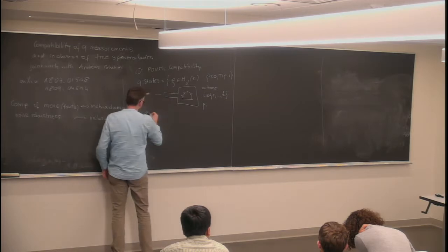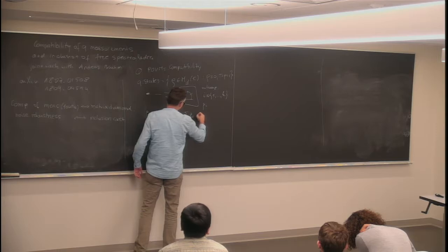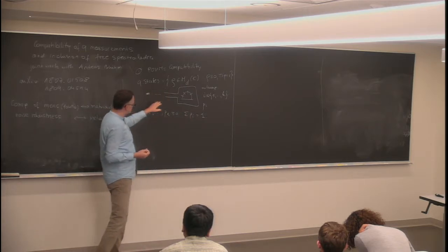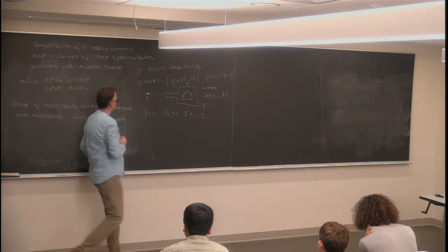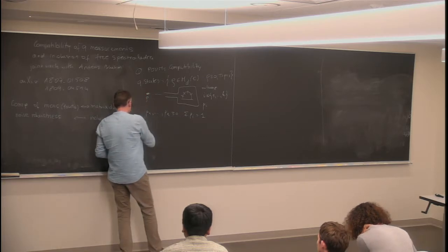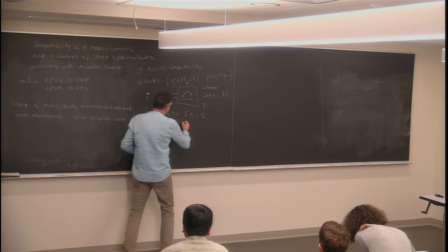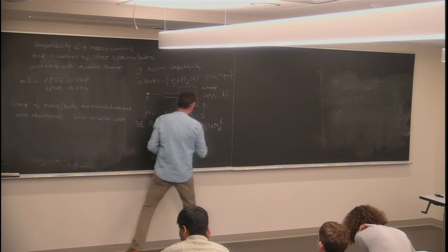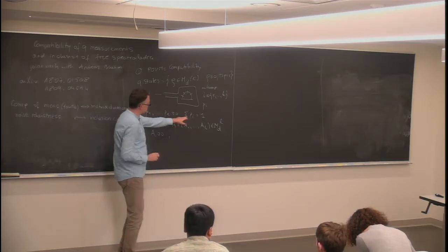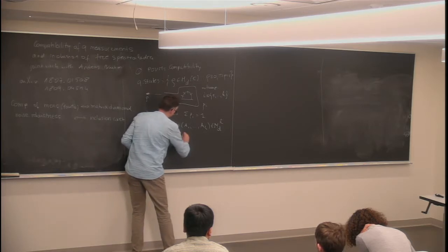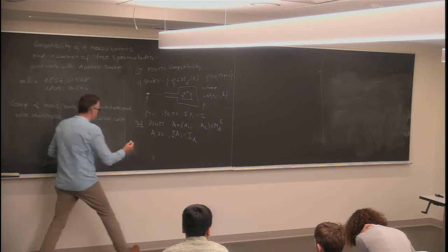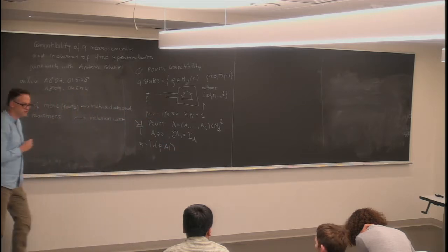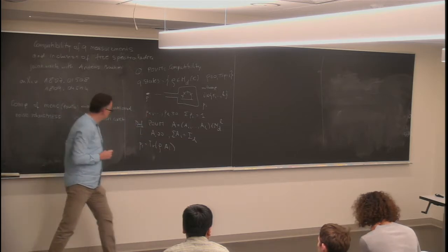You get outcome i with probability given by the Born rule. The axioms of quantum mechanics say these probabilities should be linear in the state rho, positive, and sum to 1. This is the definition of a POVM — a k-tuple of positive operators that are positive semidefinite and sum to the identity. Probabilities are obtained by the duality pairing. So a POVM is just a k-tuple of positive operators.